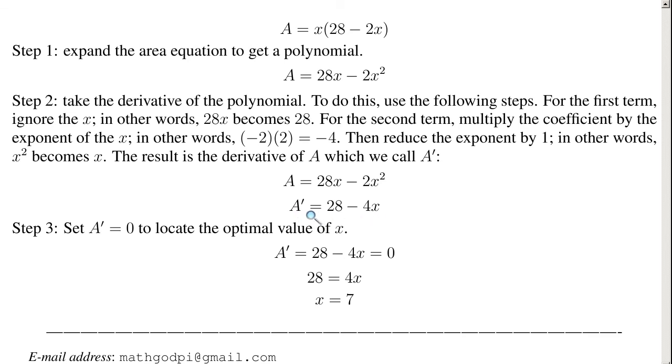In other words, A prime equals 28 minus 4x. So taking the derivative of a polynomial is that simple. It's very straightforward, very simple.